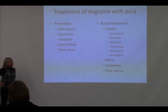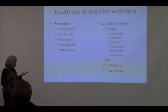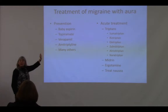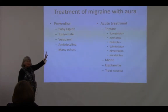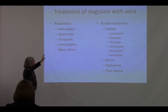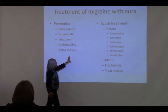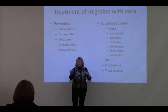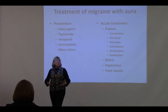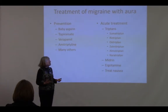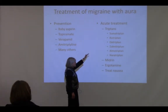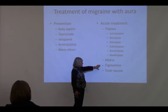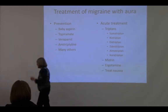How do we treat auras? Sometimes preventative medications can prevent them. Baby aspirin, topiramate (an anti-convulsant), verapamil (a calcium channel blocker), and amitriptyline are among the preventatives used. Once the headache starts, we rely on acute treatments — triptans, midrin, isometheptine, ergotamine — and we can treat the nausea. That's migraine with aura.